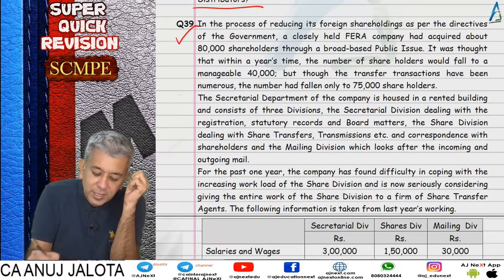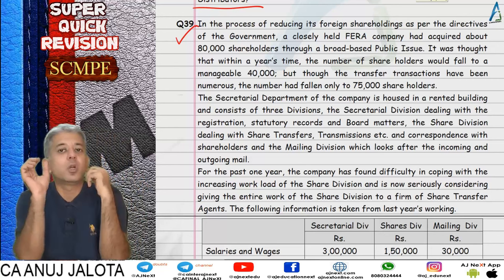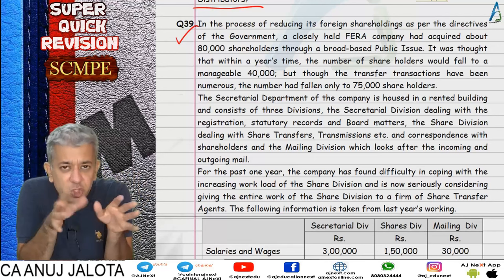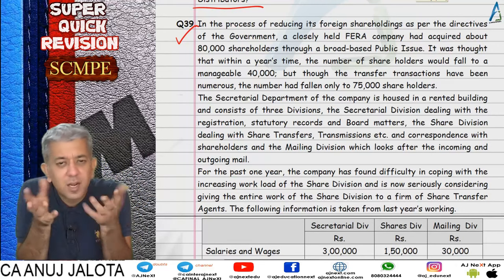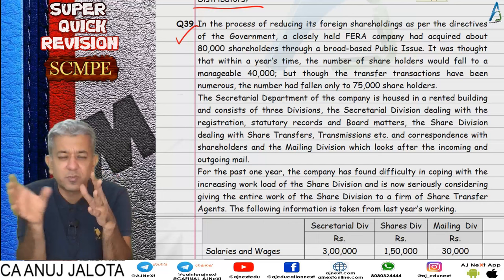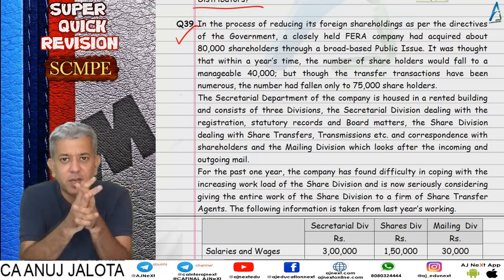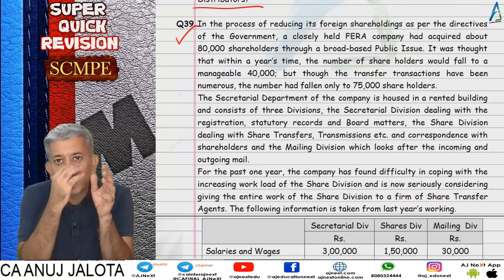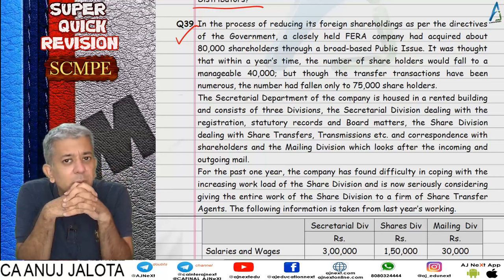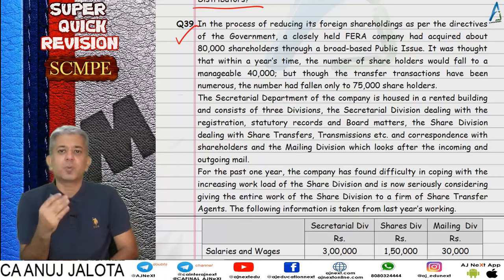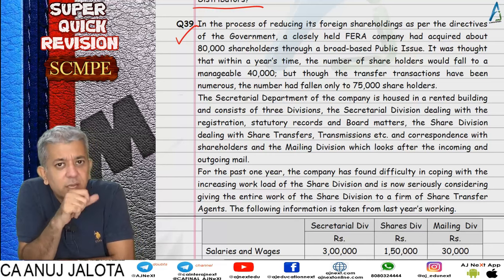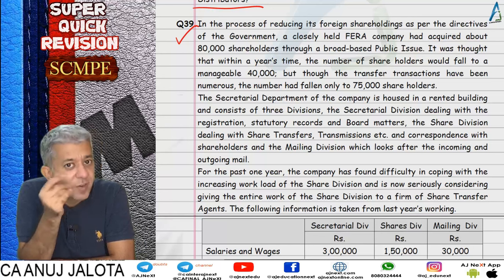Question 39: similar discontinuation decision but for 5 years. The company is a listed company with a share division handling shareholder correspondence and share transfers. They're considering giving a 5-year contract to share transfer agents. No discounting factor was given again, so I did a simple interest adjustment at the end instead.